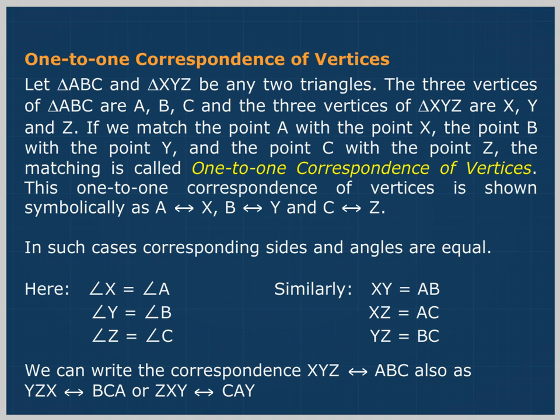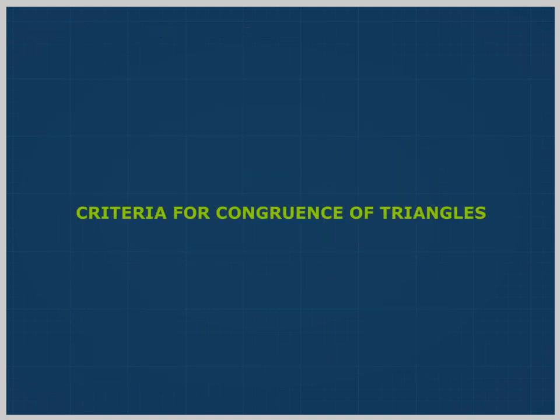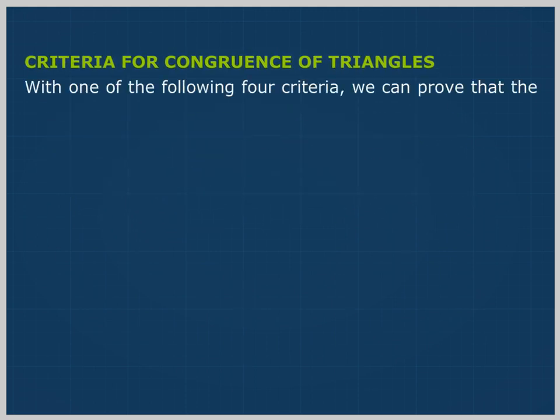We can write the correspondence XYZ corresponds to ABC also as YZX corresponds to BCA, or ZXY corresponds to CAB. With one of these four criteria, we can prove that the given two triangles are congruent.